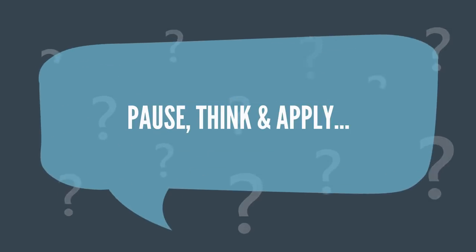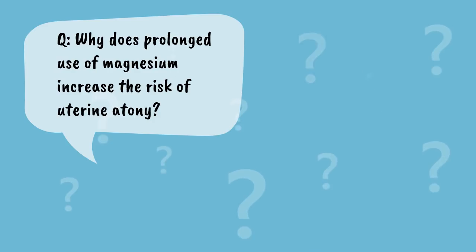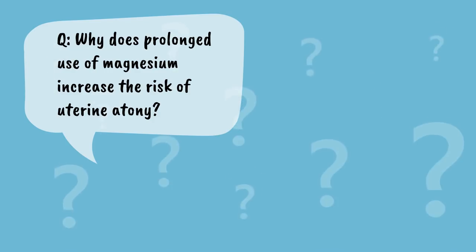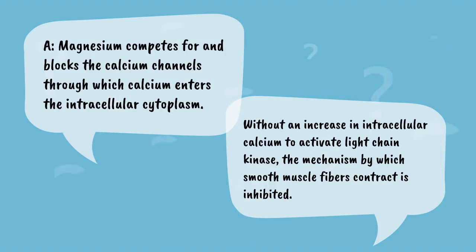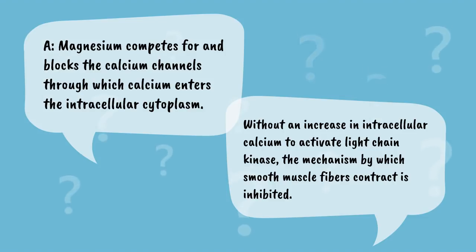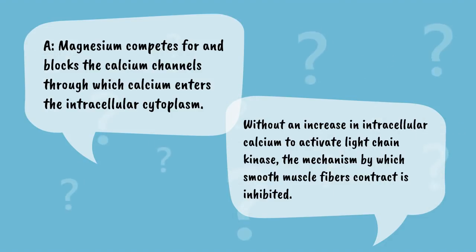Let's pause, think, and apply. Why does prolonged use of magnesium increase the risk of uterine atony? Magnesium competes for and blocks the calcium channels through which calcium enters the intracellular cytoplasm. Without an increase in intracellular calcium to activate myosin light chain kinase, the mechanism by which smooth muscle fibers contract is inhibited.